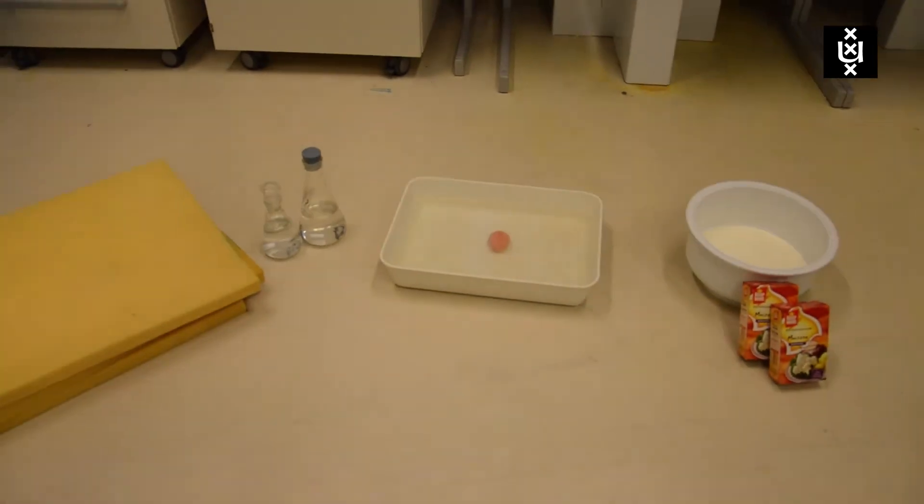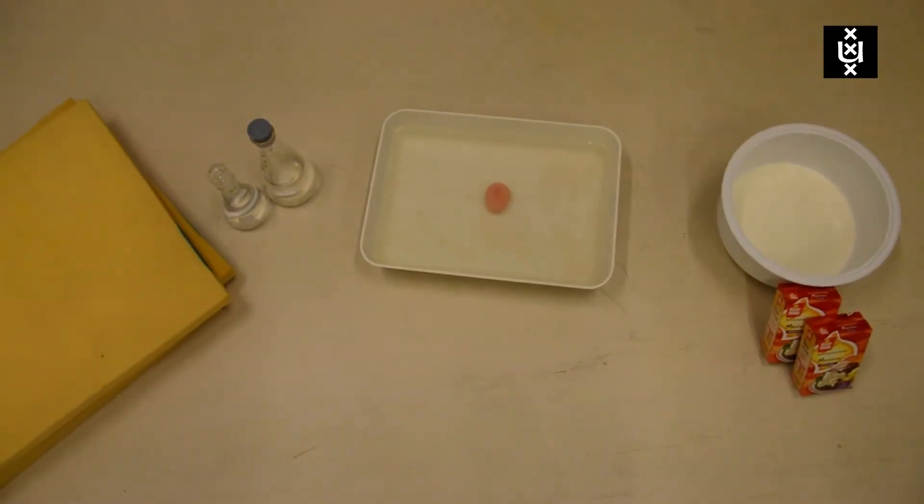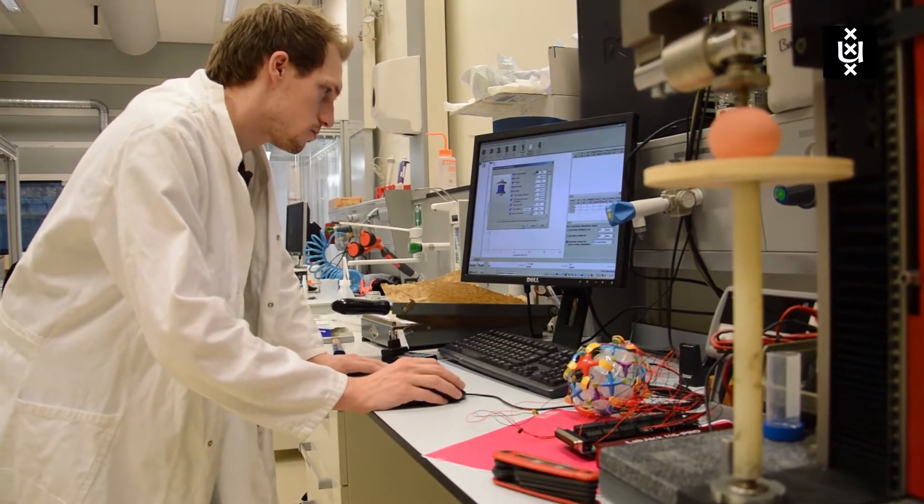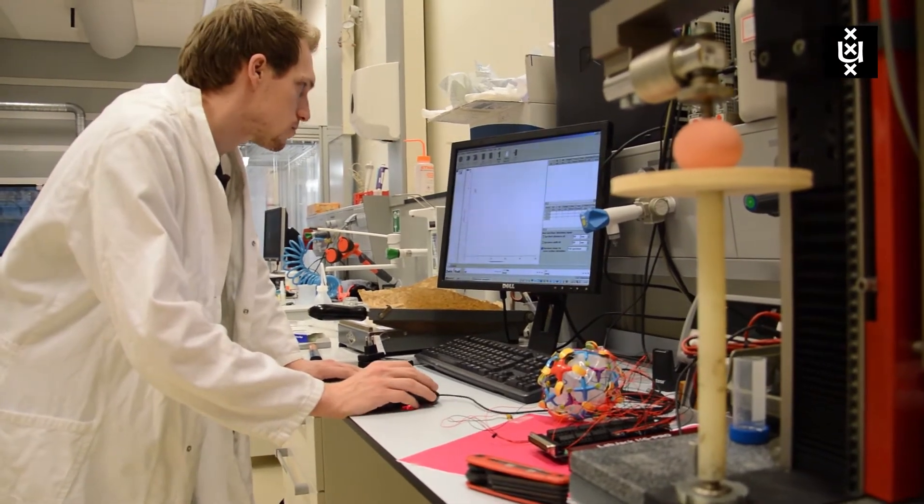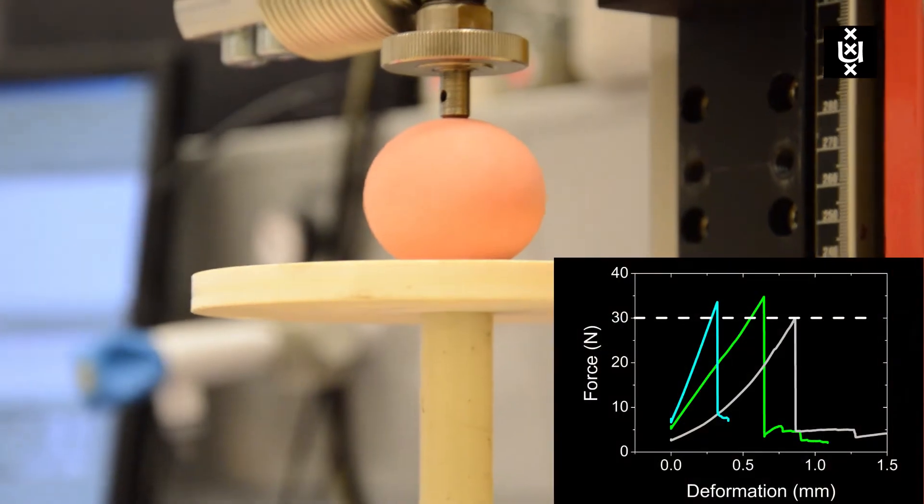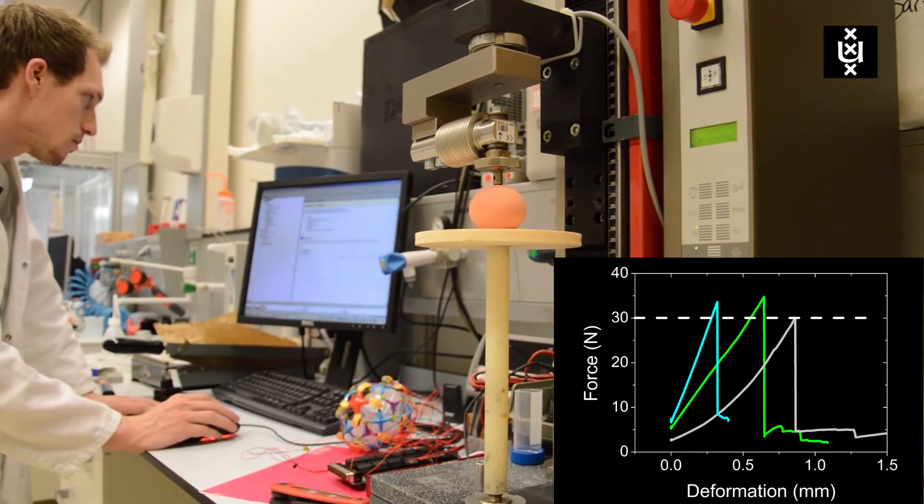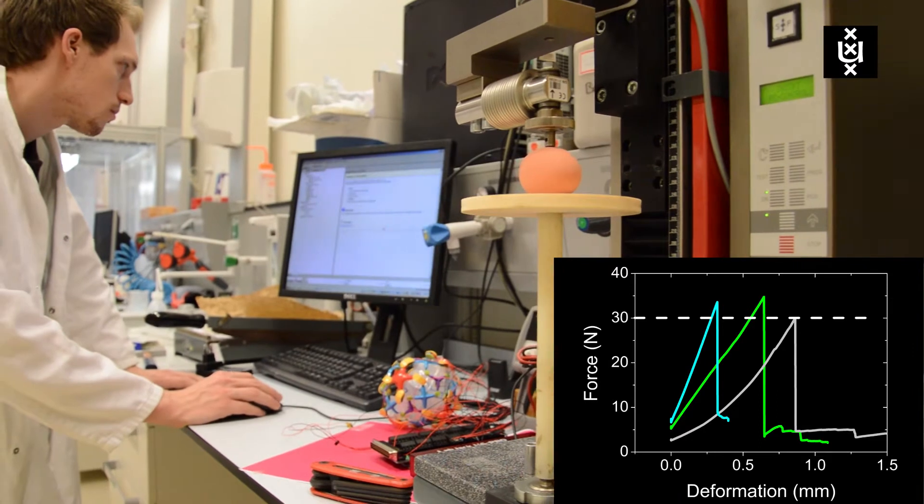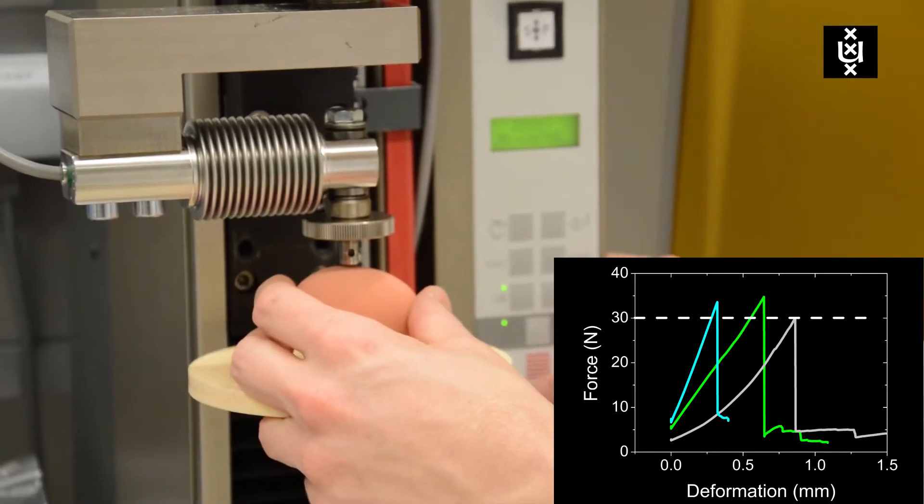But first let us check what force is actually required to break an egg. We put an egg between two plates while measuring the force and distance. The average egg breaks when a force of roughly 30 newtons is applied. Also the egg can deform about a millimeter before it actually breaks.